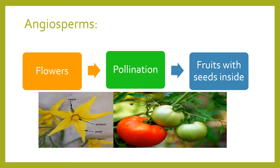Now we'll talk about sexual reproduction in angiosperms. They reproduce sexually — there's a sperm and there's an egg, and they need to join to produce a seed. In grades 3 and 4 we said pollen changes into a seed after pollination, but now we're adding a very important step: fertilization. We cannot have seeds — the baby plant — unless fertilization happens. In sexual reproduction, there is fertilization in angiosperms.